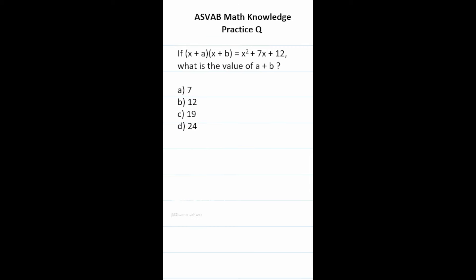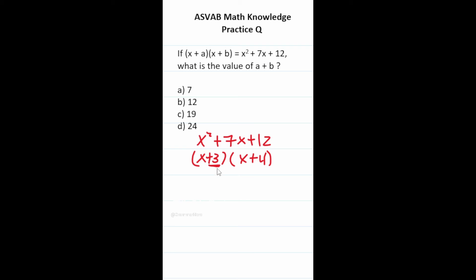This practice question says: if (x plus A)(x plus B) equals x squared plus 7x plus 12, what is the value of A plus B? The easiest approach is to factor x squared plus 7x plus 12. We need two numbers that multiply to 12 and add to 7: that's 3 and 4. So A is 3 and B is 4, and A plus B equals 7. The correct answer is A, 7.